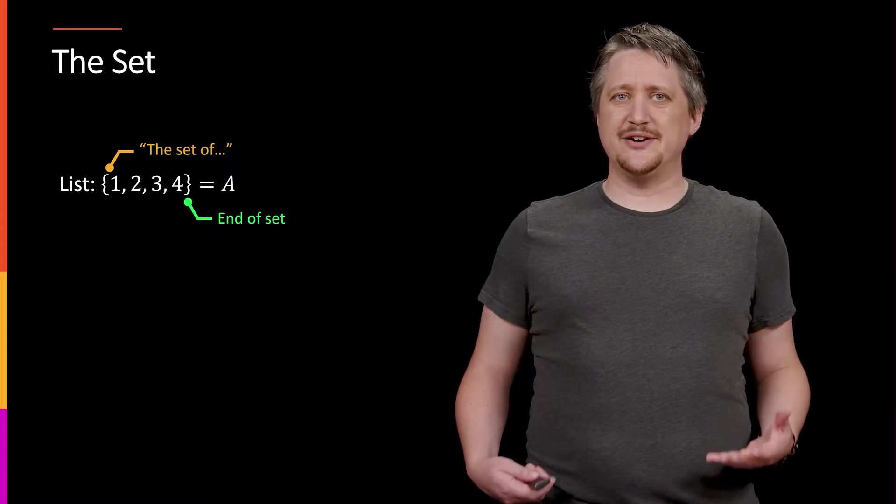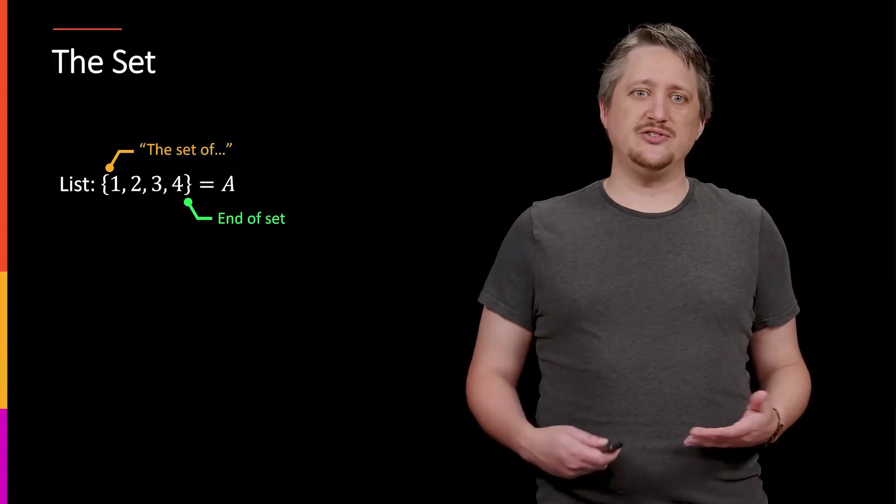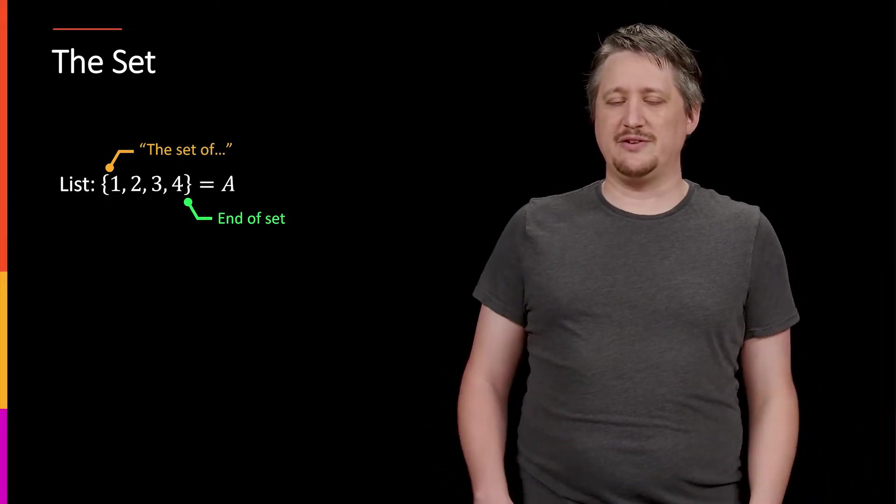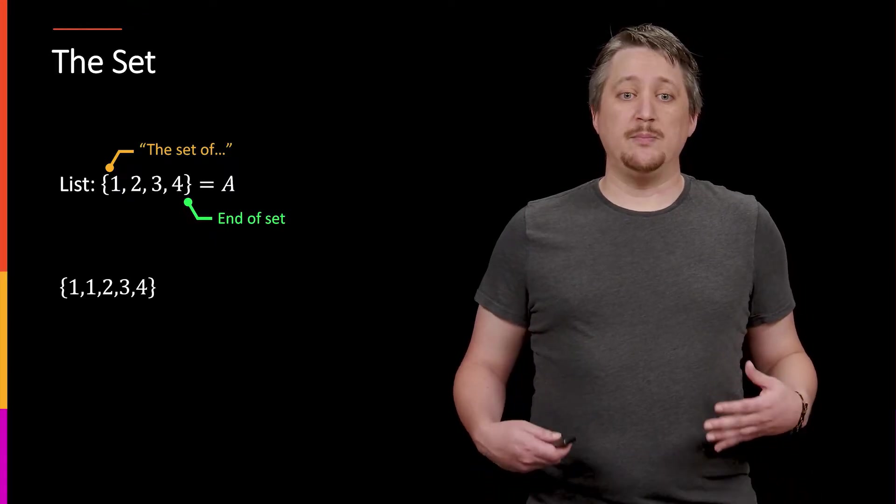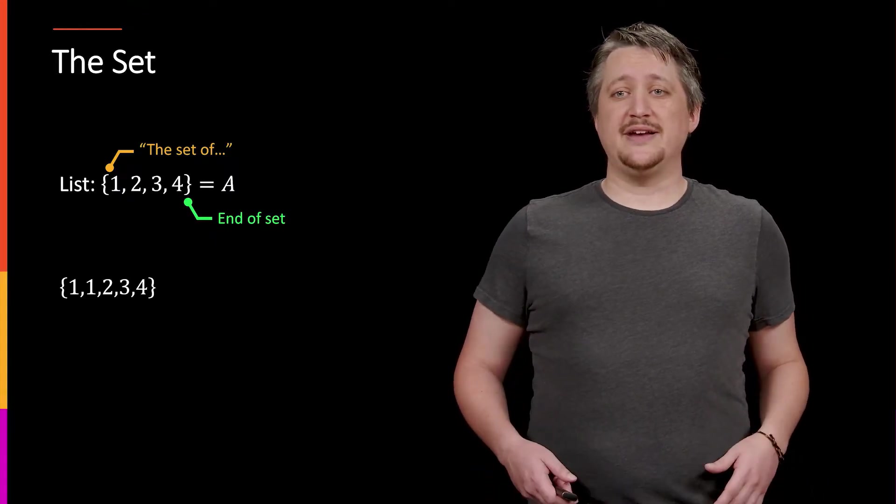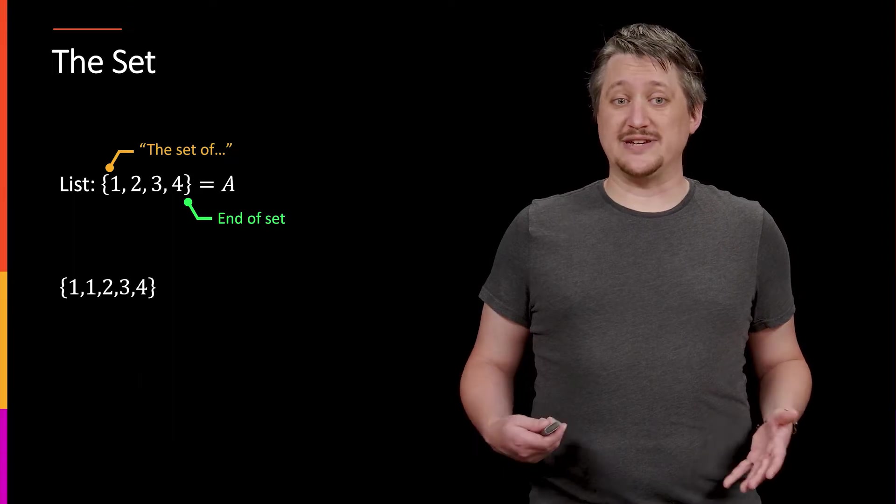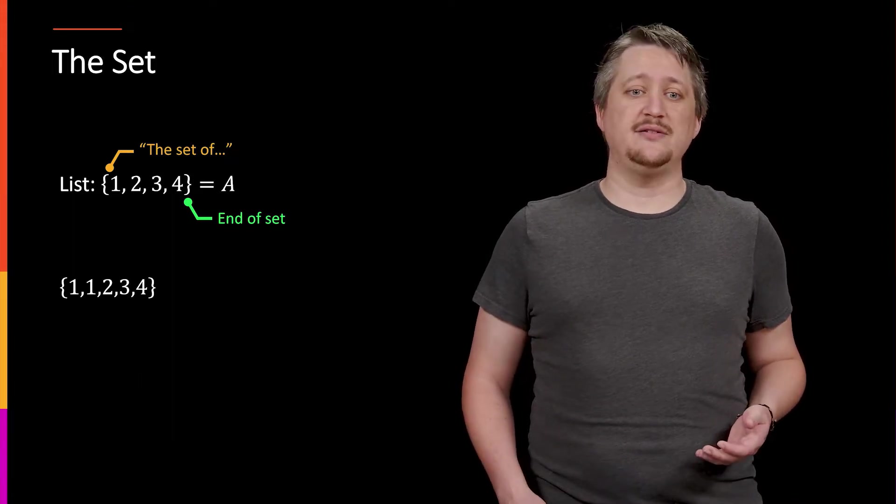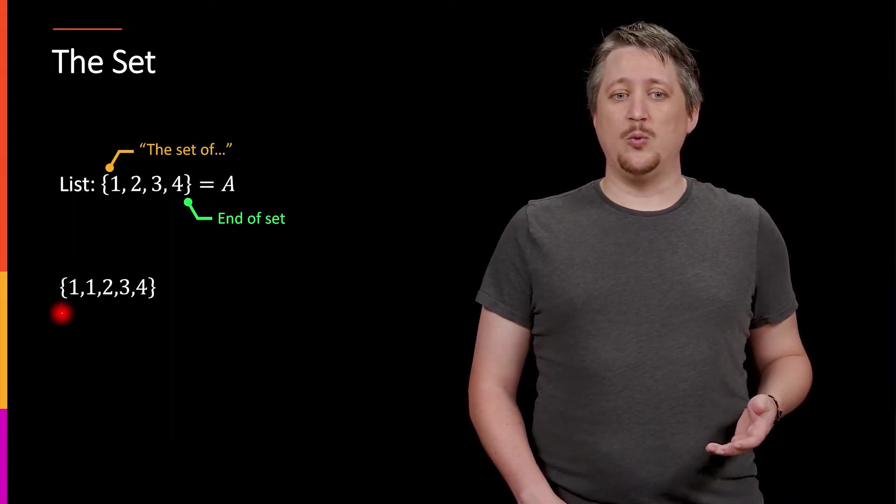And then that closing brace tells you that that's the end. So this is all of the set. The set A is one, two, three, and four. That's it. So this idea of a set is a collection of things and you can just list out the things and that's one way of getting the set.